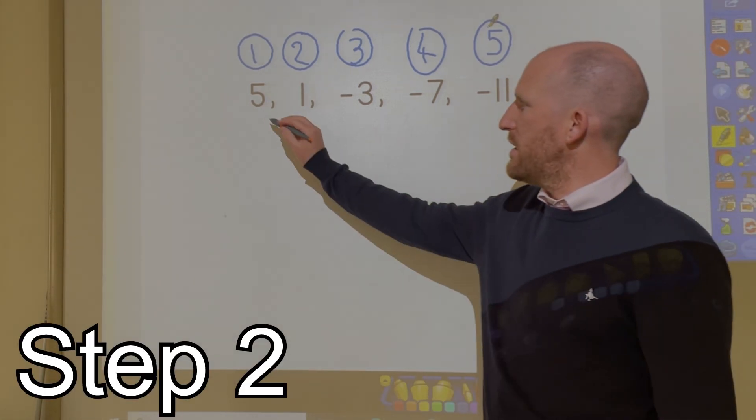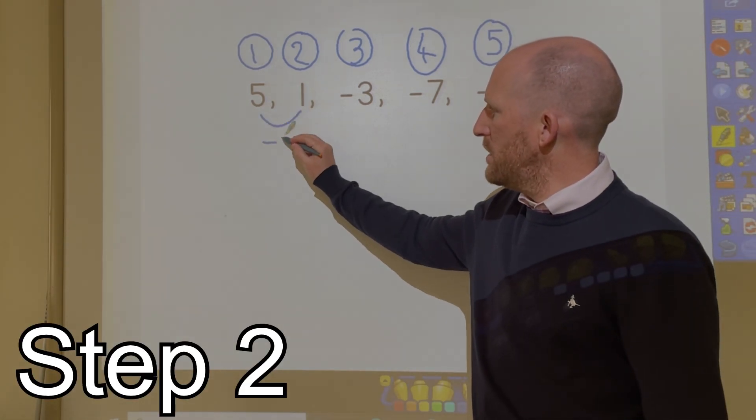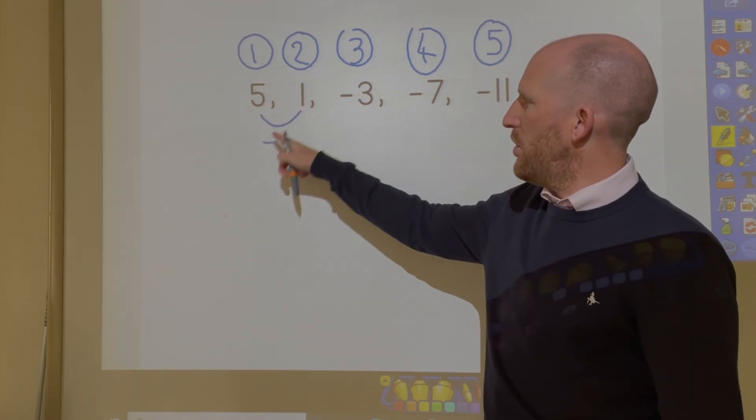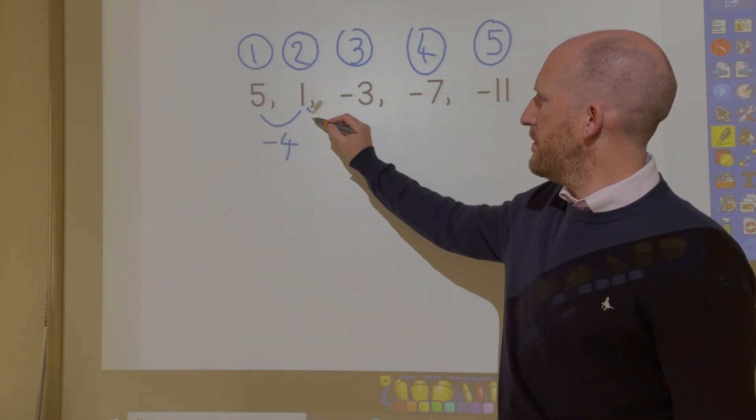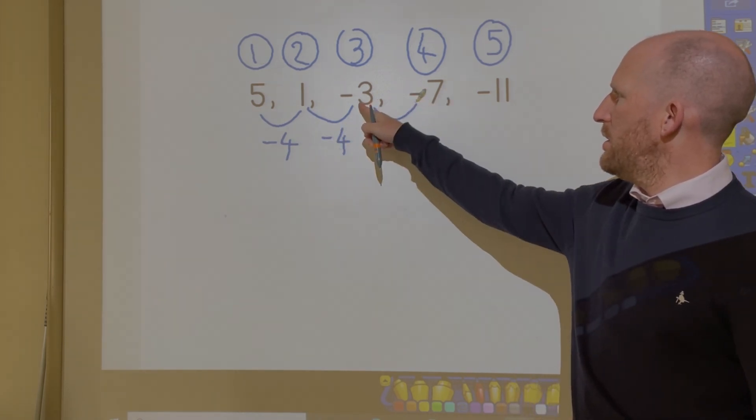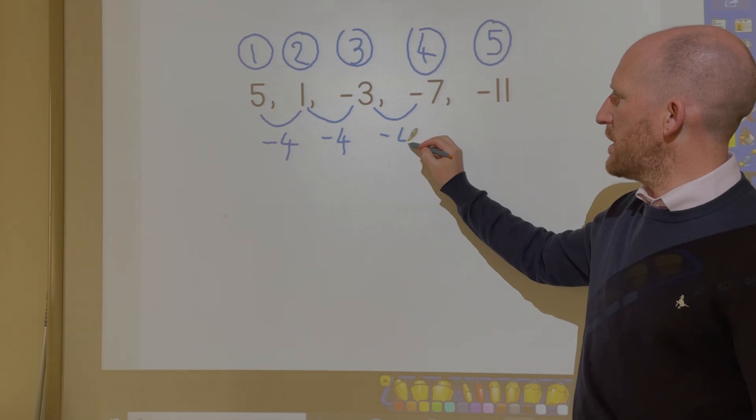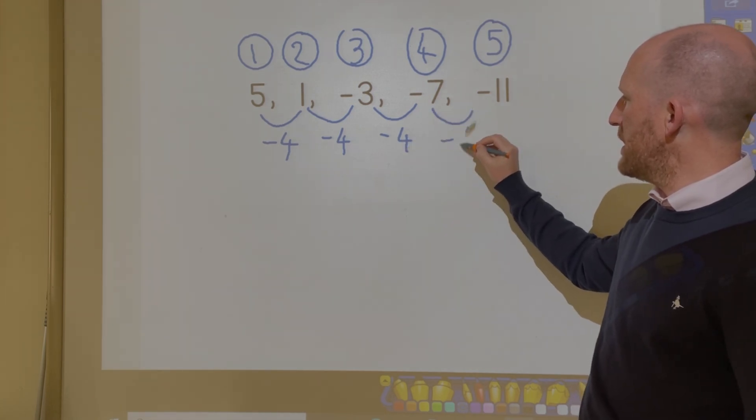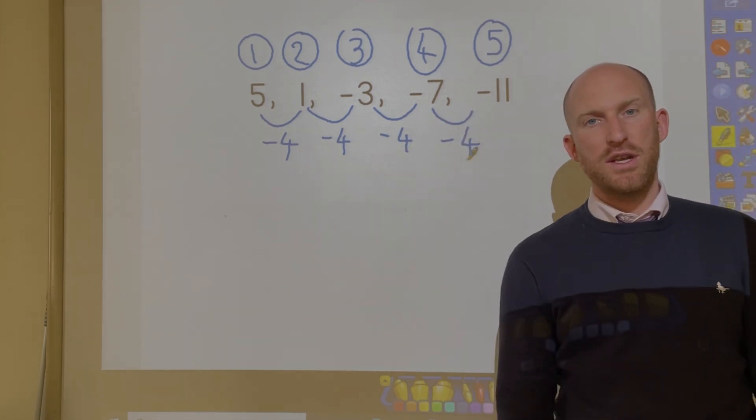Step 2, I need to find the difference between all of these. So 5 and 1, it's take away 4. 1 and negative 3, it's take away 4. Negative 3 and negative 7, it's take away 4. And it's take away 4 each time.